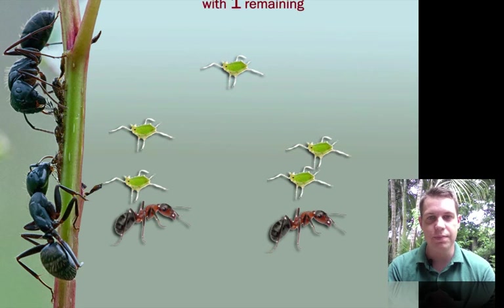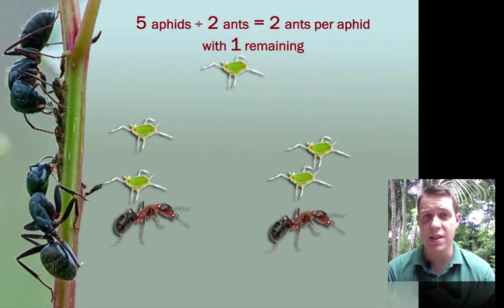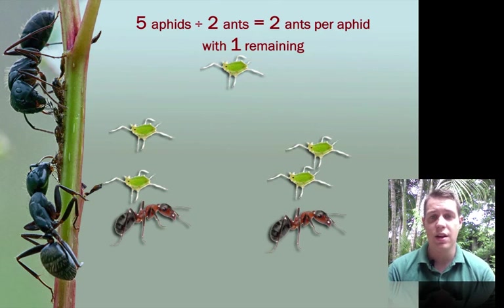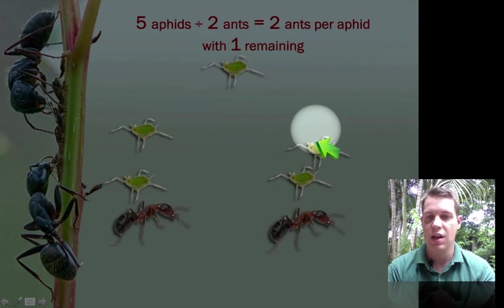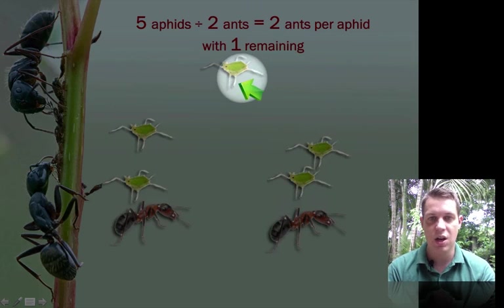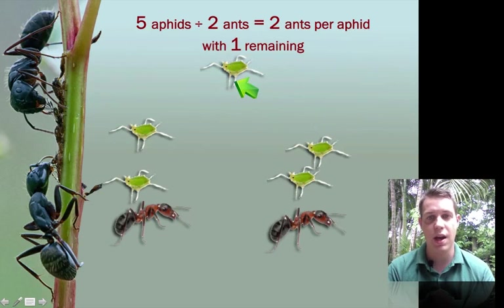So, what we get is that 5 aphids divided between 2 ants means we get 2 aphids per ant with 1 remaining. Which we can see right here. 2 aphids for this ant, and 2 aphids for this ant. With 1 left over.